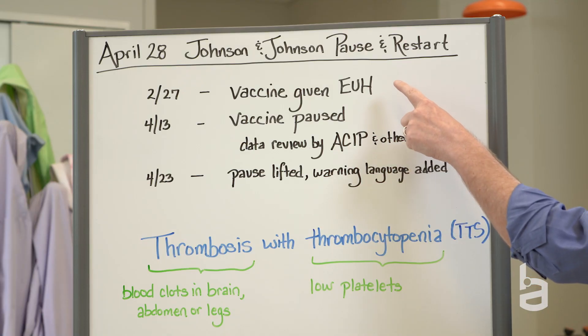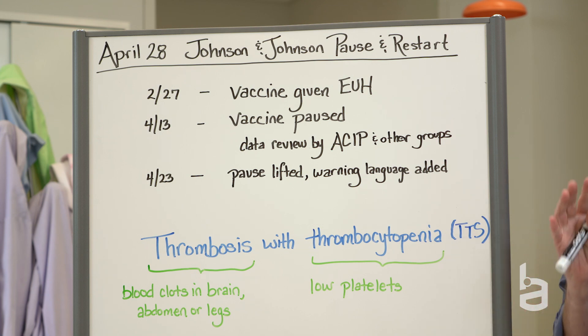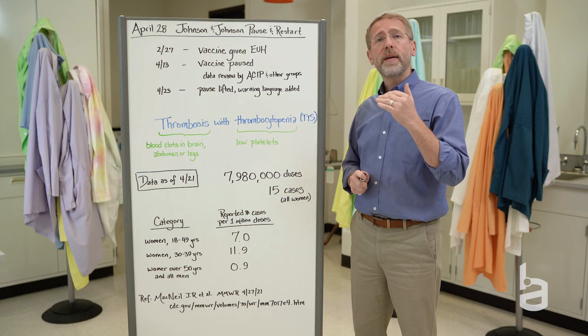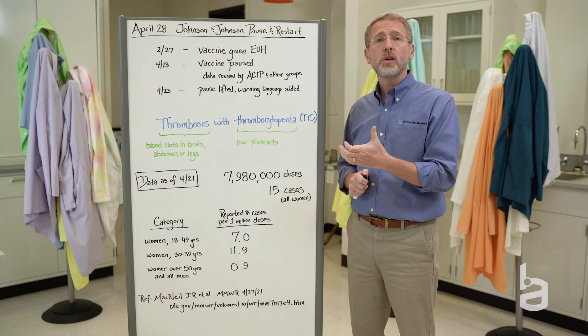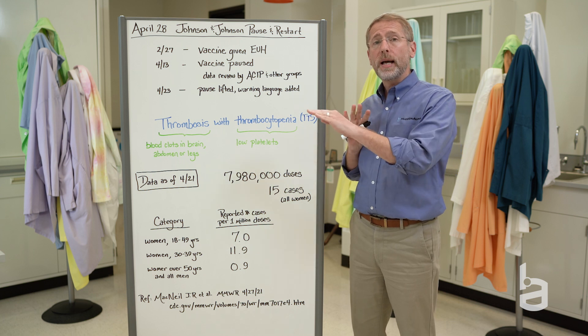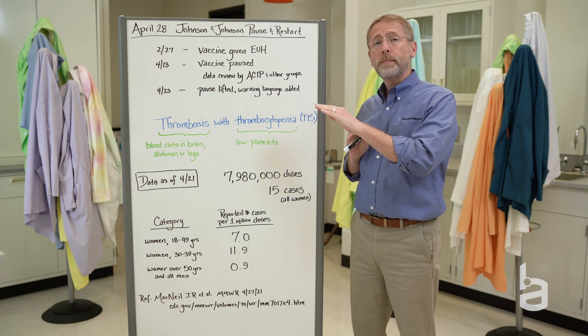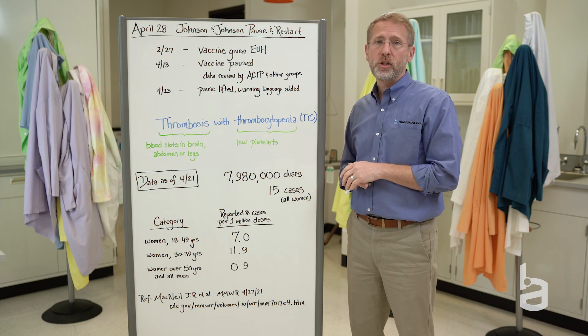So the vaccine was first given emergency use authorization at the end of February. And then on the 13th of April, the CDC and the FDA recommended pausing vaccination, because at that point they had received data about six women that developed a really rare but serious set of side effects. And so they made the recommendation to pause vaccination at that point, while a group could assemble and review the data and then make decisions about going forward.